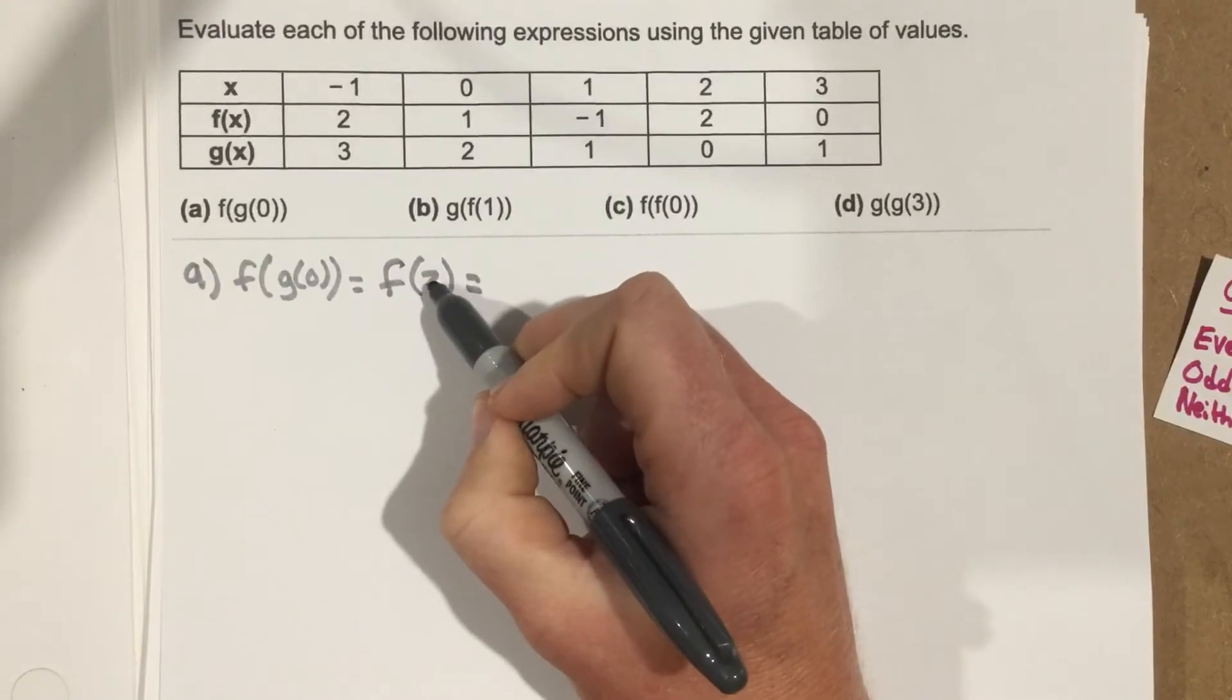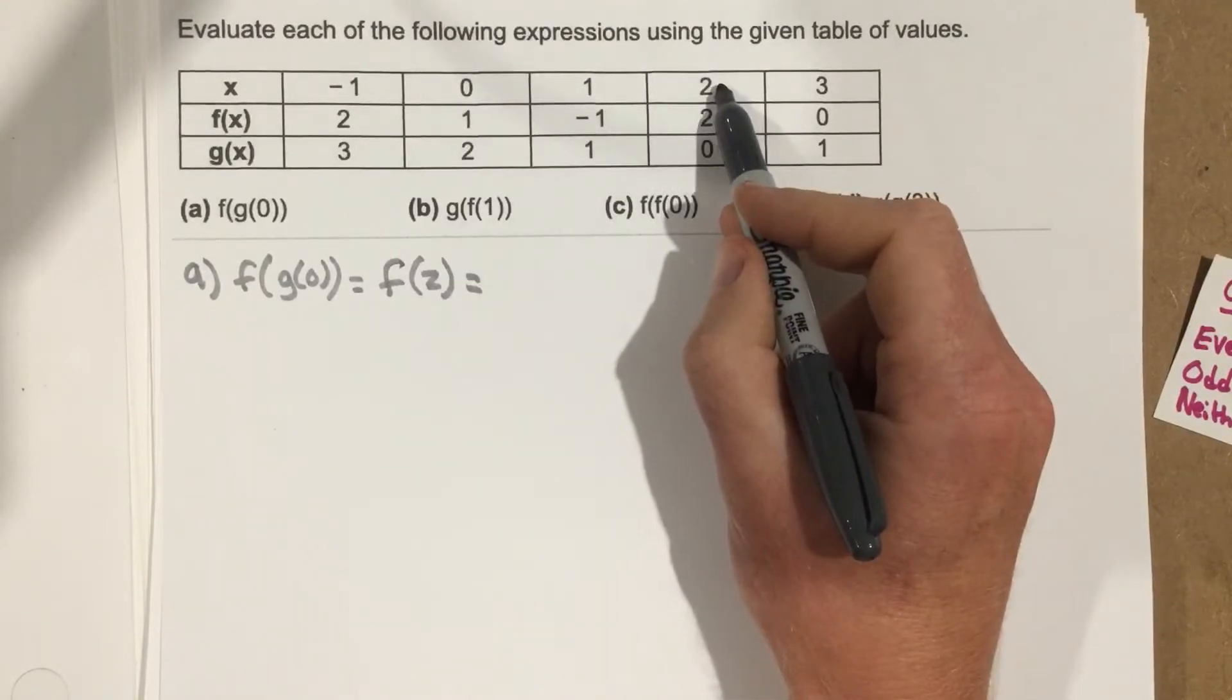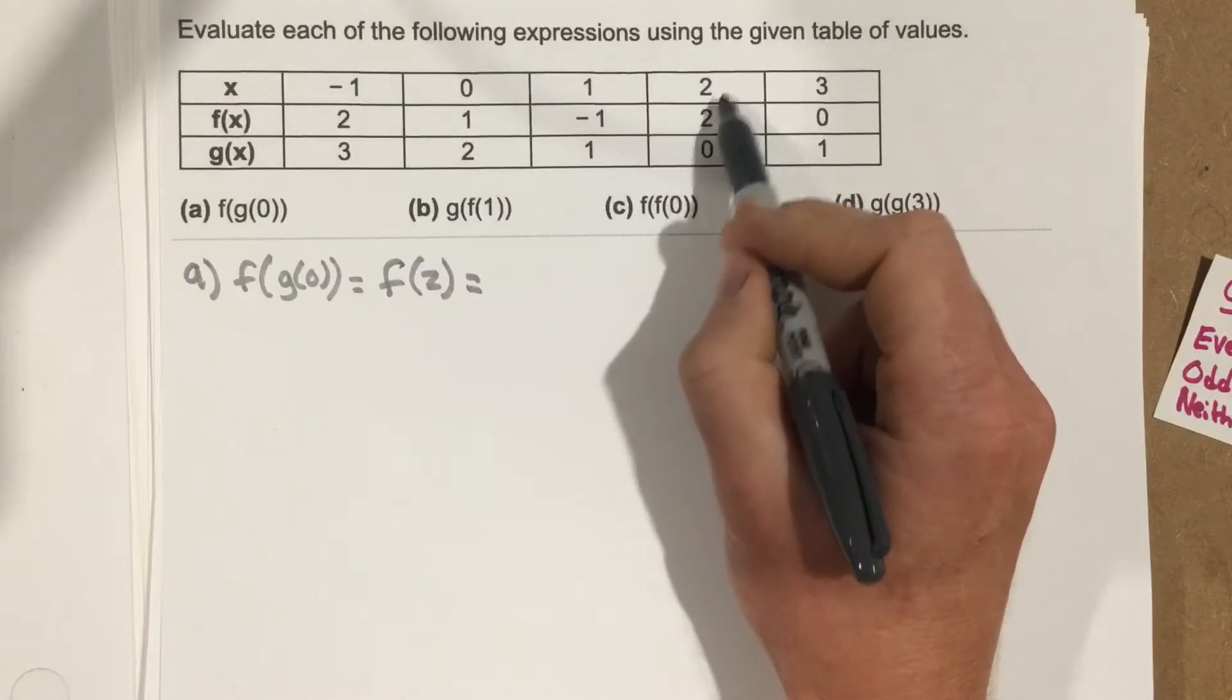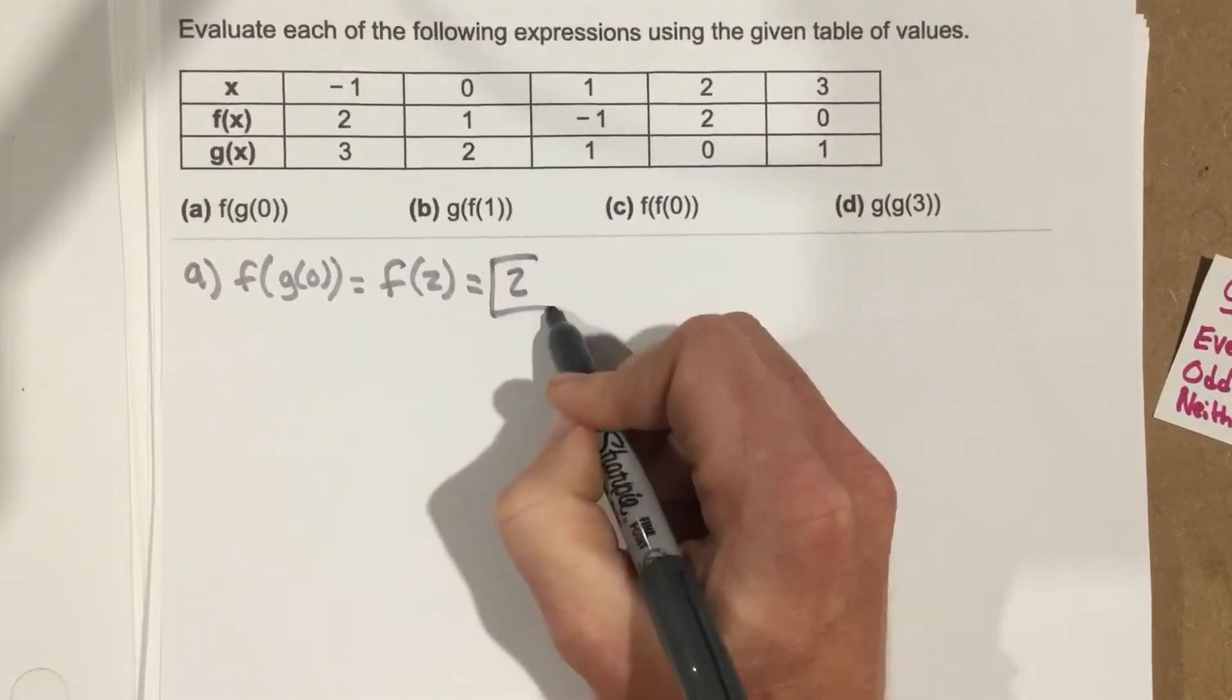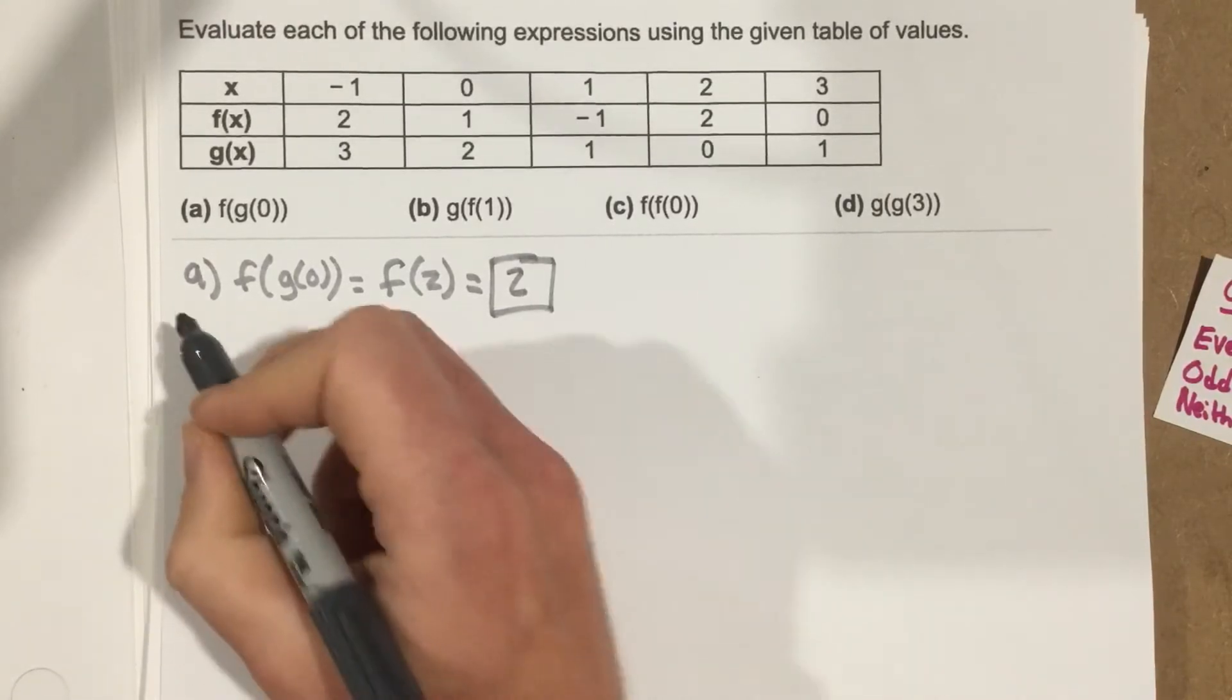Now I go to 2 for the x value, which is here, and I go to the f function which says the output for f of 2 is 2. So I end up with 2 for a solution. Not so bad.